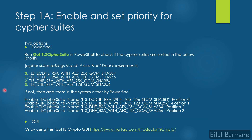Step number one for a specific user: we need to enable and set priority for cipher suites. We can do it either by PowerShell or by using a GUI. With PowerShell, use the command 'Get-TlsCipherSuite' to check if cipher suites are enabled and the proper priority is set. They need to be set in the specified order. If they are not, we can use these four PowerShell commands, executing them one by one.